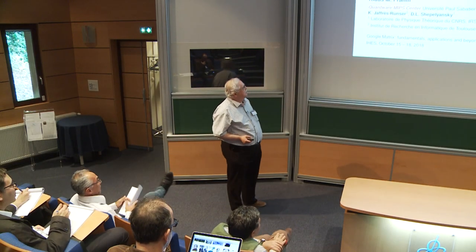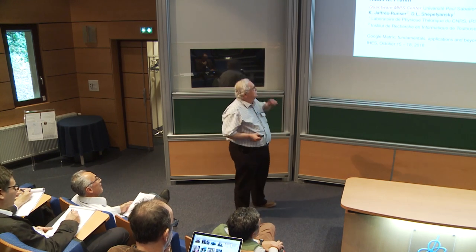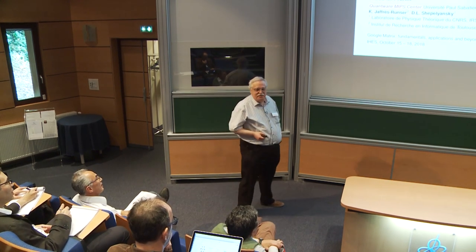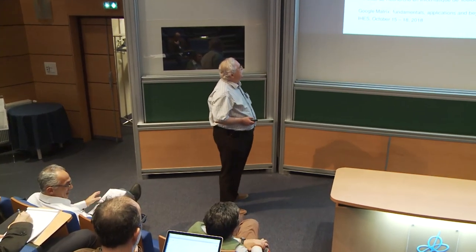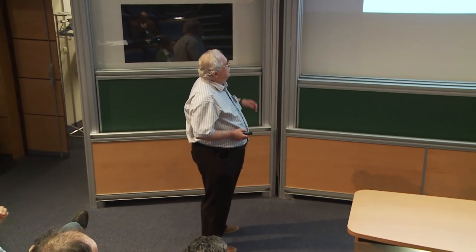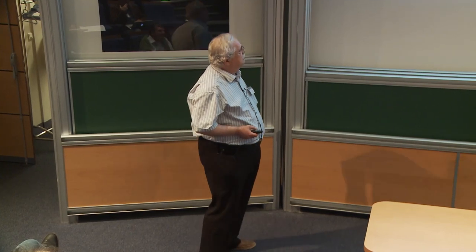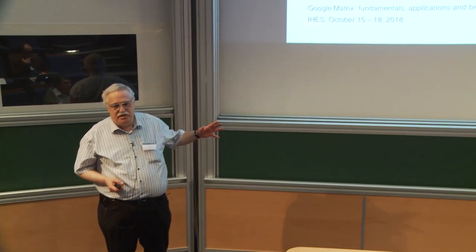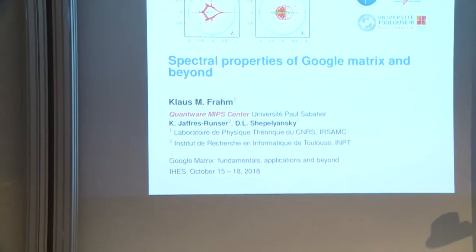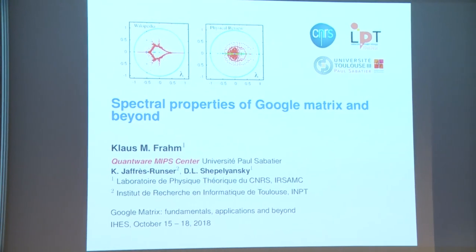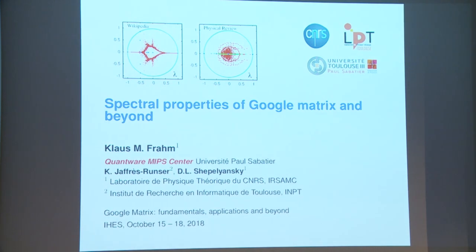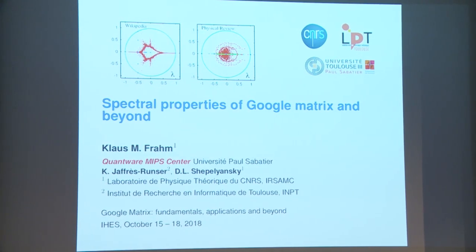Thank you very much for the invitation. I will give a quite elementary introduction to Google Matrices, especially about spectral properties. After a long introductory part, I will speak about the concept of reduced Google Matrices, which is an important part of this talk — work done in collaboration with Katja and Dima. You can see two simple examples of the complex eigenvalue spectrum for the English Wikipedia network from 2009 and the Physical Review citation network up to 2012.